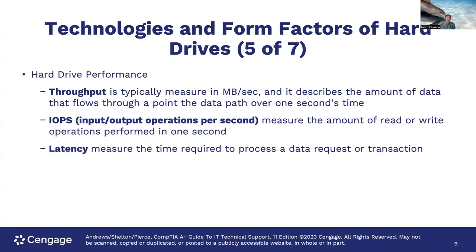Hard drive performance throughput is typically measured in megabytes per second, describing the amount of data that flows through a point in a data path over one second. IOPS — input/output operations per second — measures the amount of read or write operations performed in one second. Latency is the time required to process a data request or transaction.